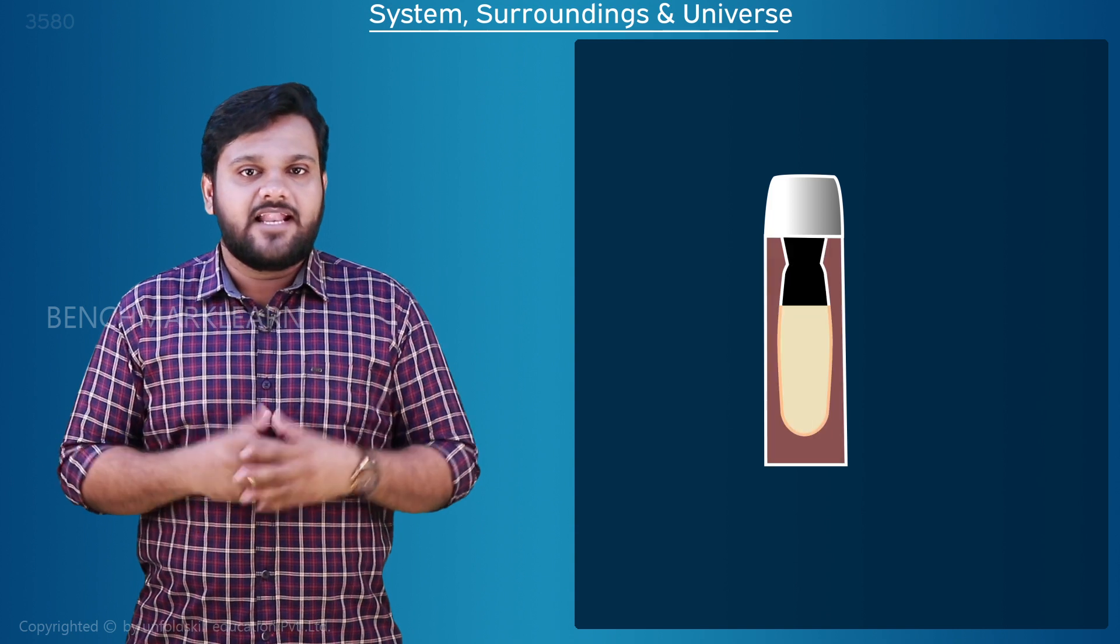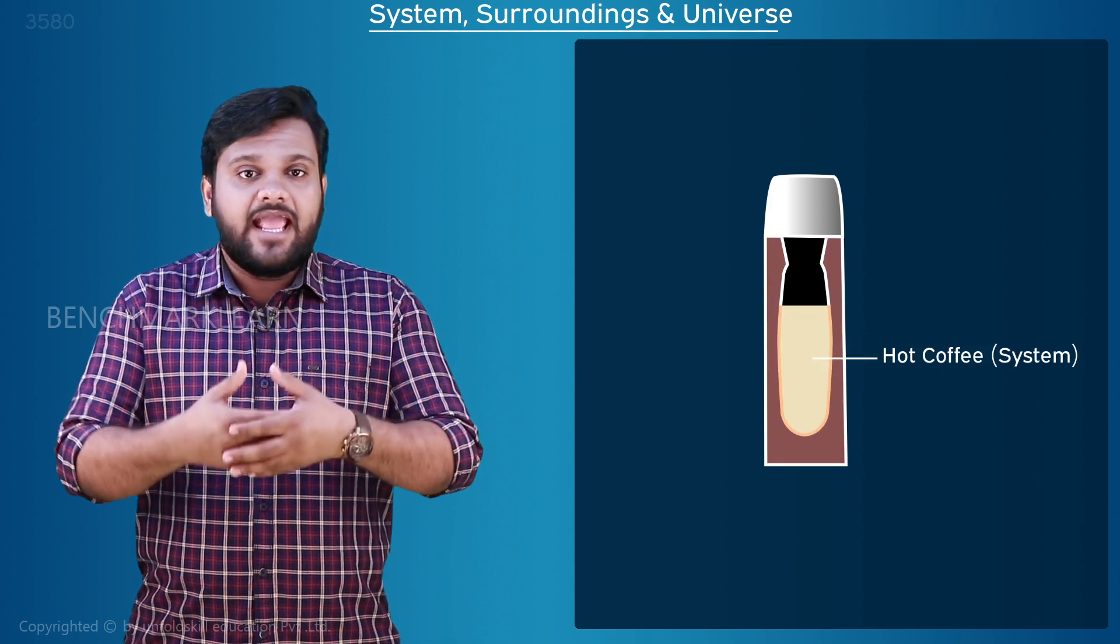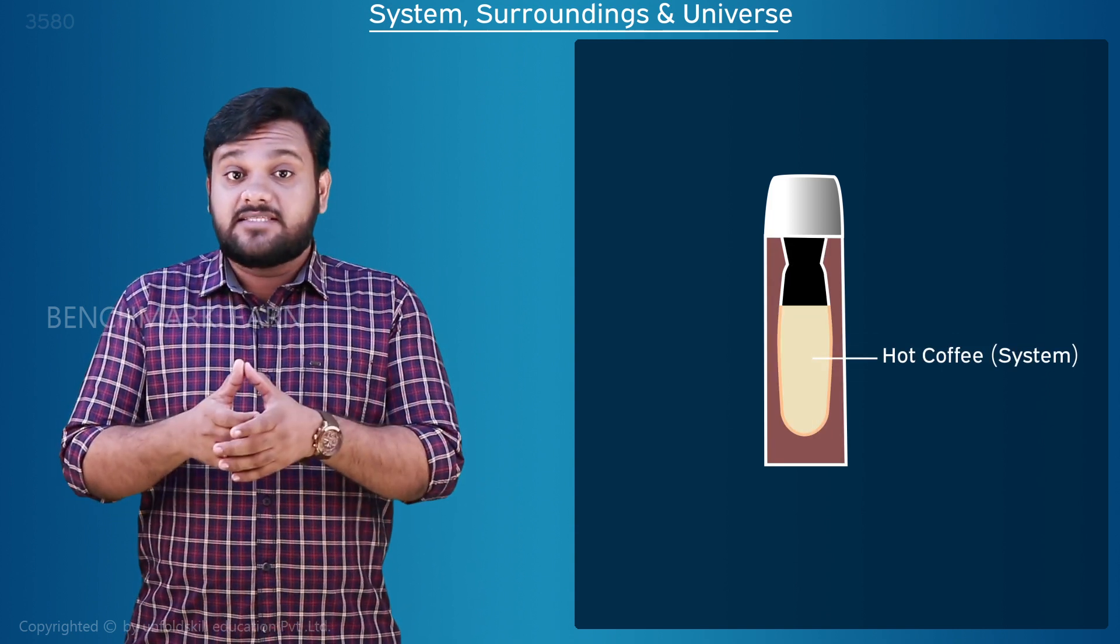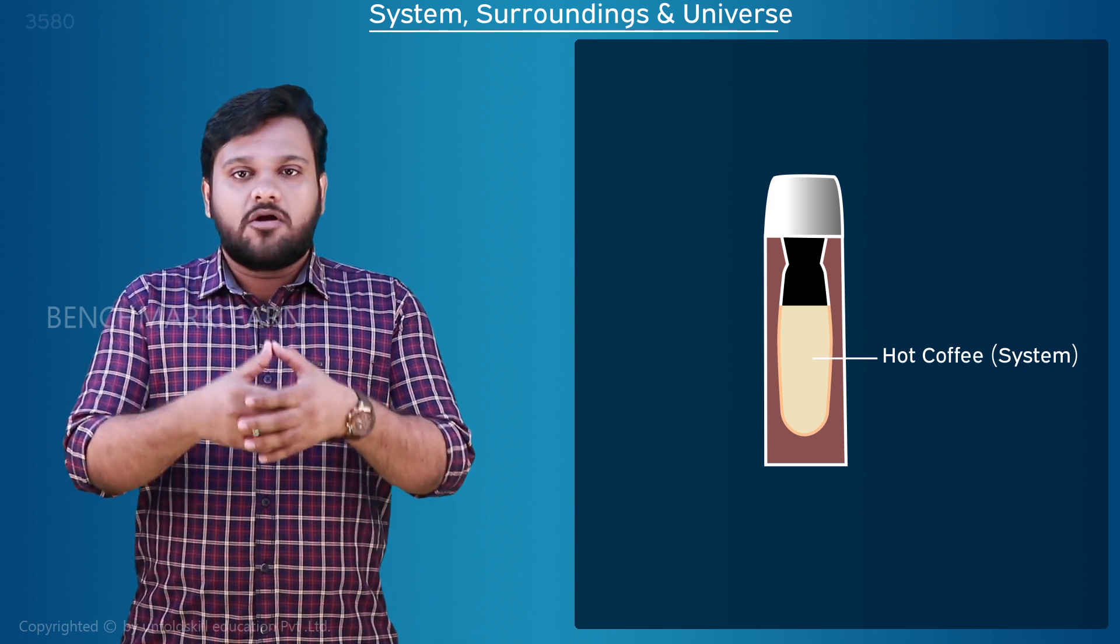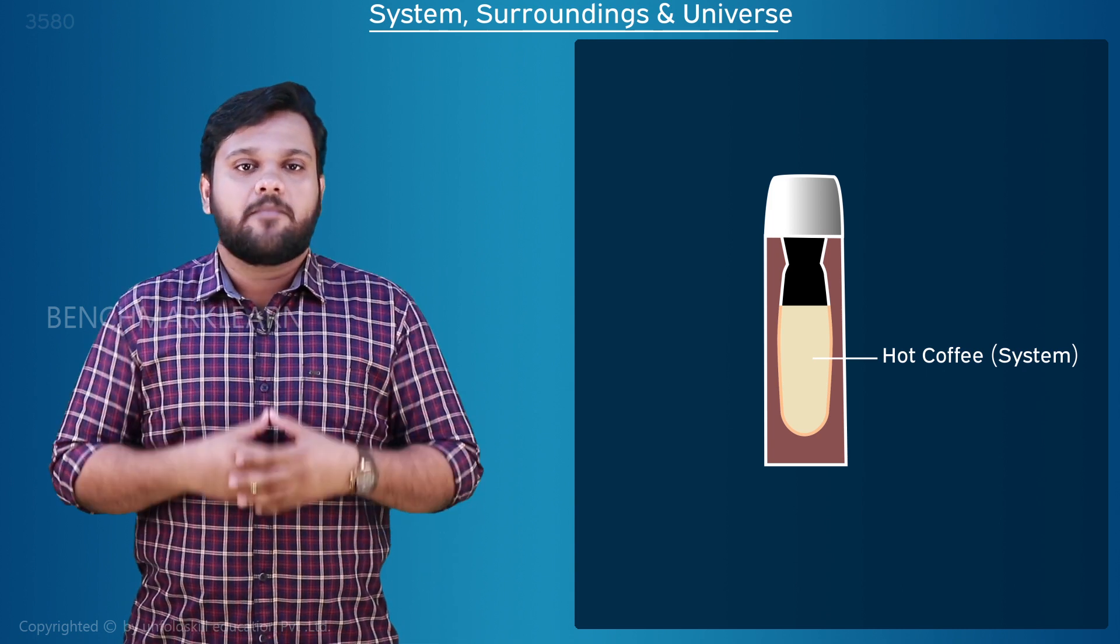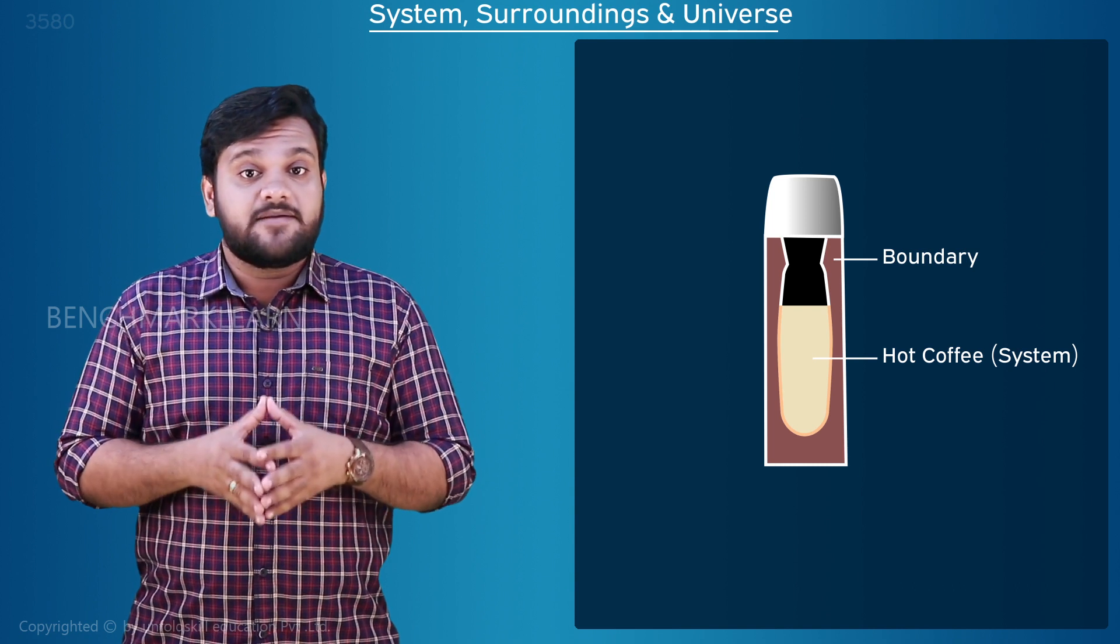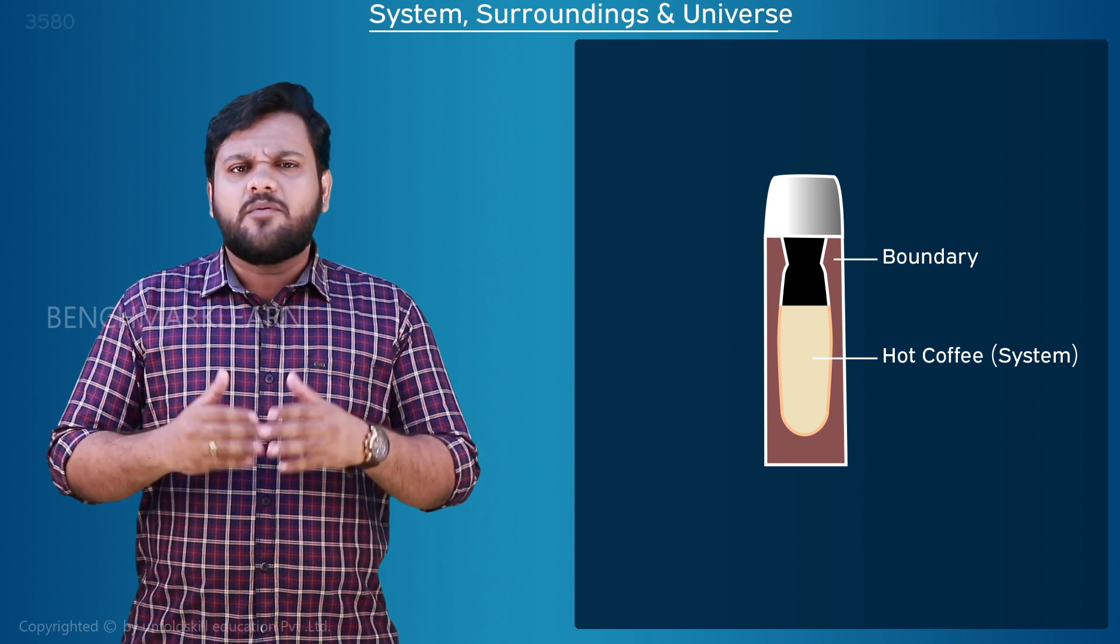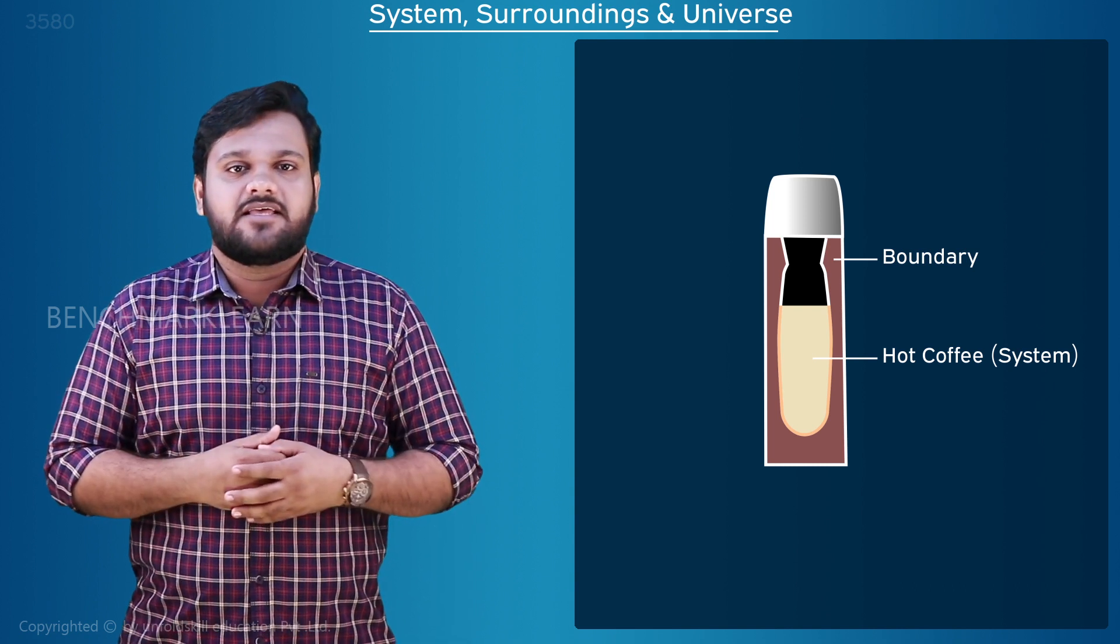Let us consider the hot coffee taken in a closed thermoflask. We have selected hot coffee as our area of study, so it is our system. The flask separates the hot coffee from the outside environment, so the flask is the system boundary. Whatever exists outside the flask is our surrounding.